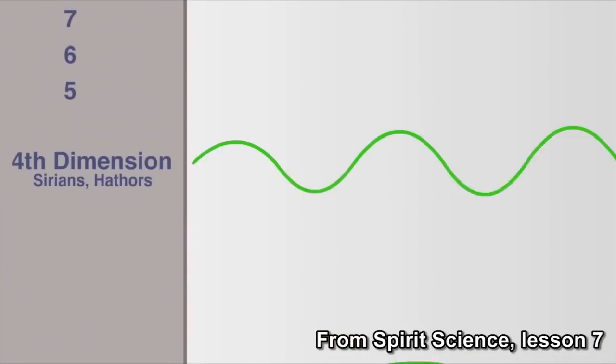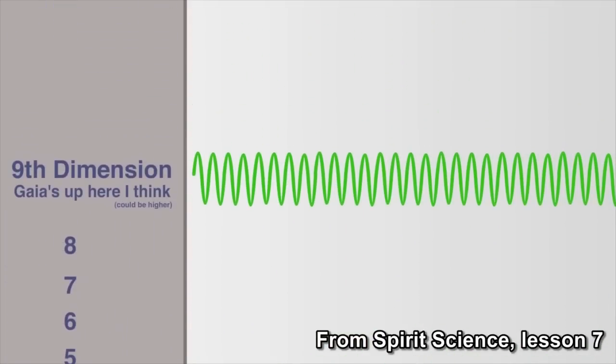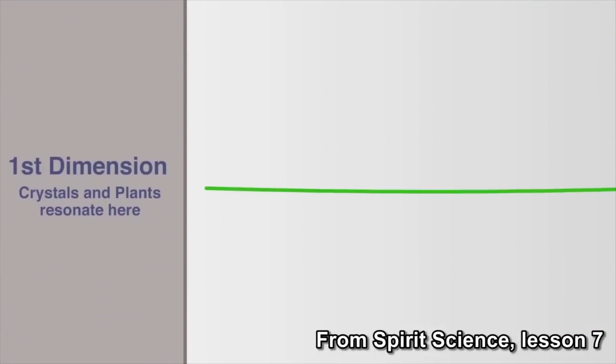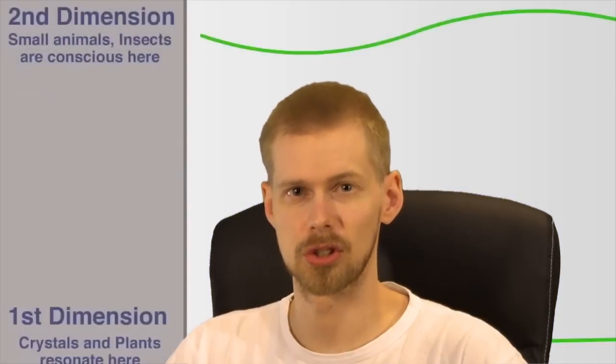As you go up in dimensional levels, the wavelength gets shorter and shorter, with higher and higher energy. As you go down in levels, the wavelength gets longer and longer, with lower and lower energy. How do we know this is the third one? And remember before when we established that everything in our universe has the same wavelength? Well, apparently insects and crystals and plants don't exist in our universe.